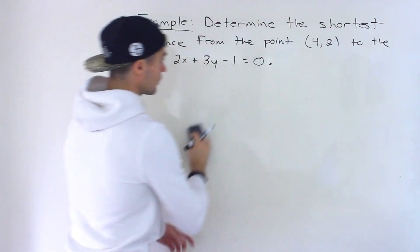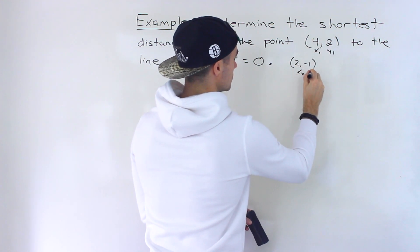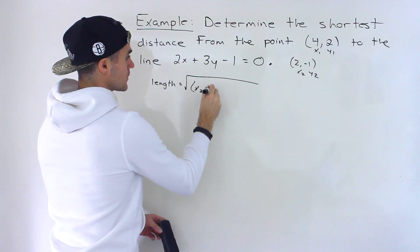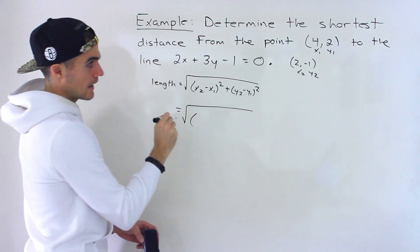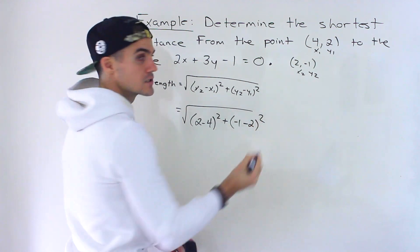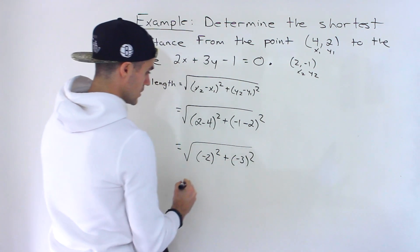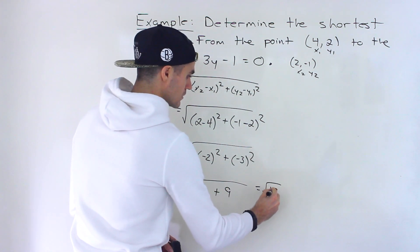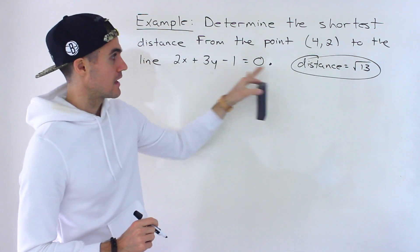Now we use the distance formula between the intersection point (2, negative 1) and the original point (4, 2). Let (x1, y1) = (2, negative 1) and (x2, y2) = (4, 2). Distance equals the square root of (x2 minus x1) squared plus (y2 minus y1) squared. That gives root of (2 minus 4) squared plus (negative 1 minus 2) squared, which is root of (negative 2) squared plus (negative 3) squared, equals root of 4 plus 9, which is the square root of 13. That's the shortest distance.